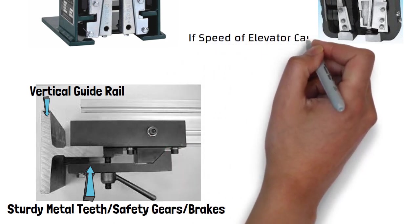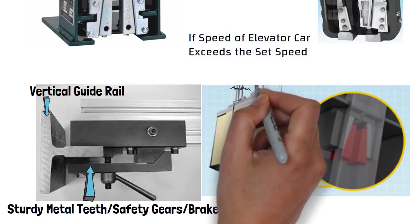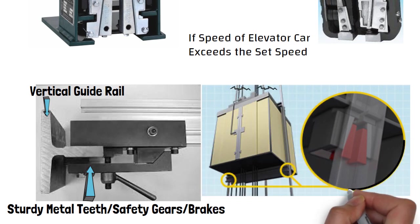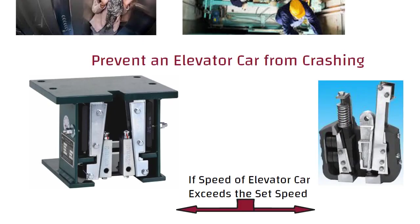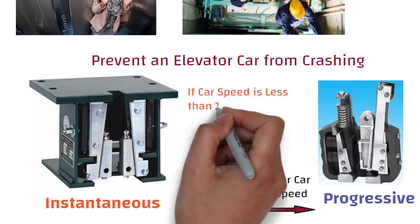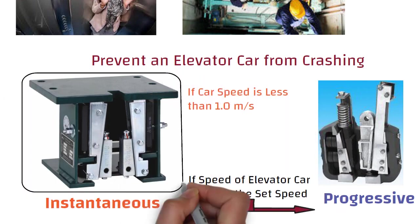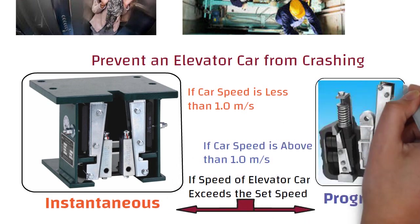If the running speed of the elevator car exceeds the set speed, or if the elevator suspension rope breaks down, the elevator safety gear stops the elevator car and holds it at the elevator guide rail. Usually these brakes are installed on the elevator car or counterweight frame. Lift safety gears are of two types: instantaneous and progressive. If the car speed is less than 1 meter per second, instantaneous type safety gears are used. If the car speed is above 1 meter per second, progressive safety gears are used.